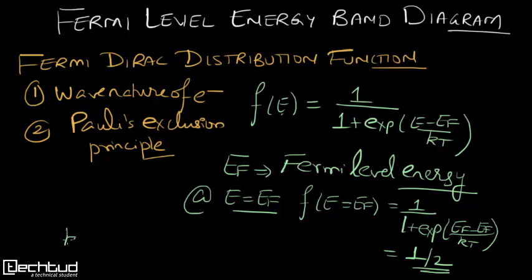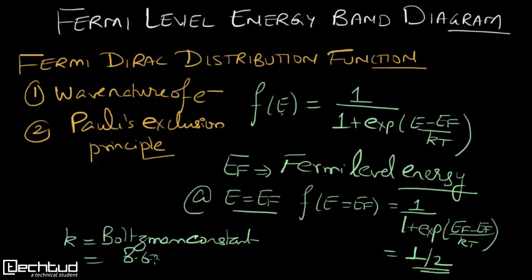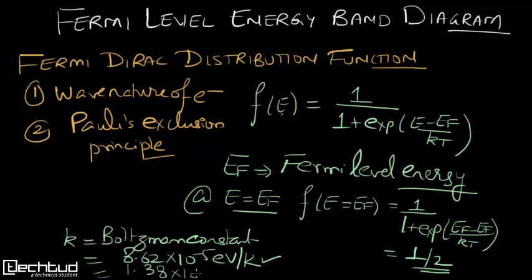Here k is the Boltzmann constant, with a value of 8.62 times 10 to the power of minus 5 electron volts per Kelvin. This is the unit we are going to use, since we generally express energy in electron volts.